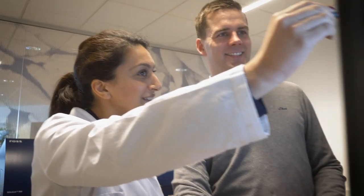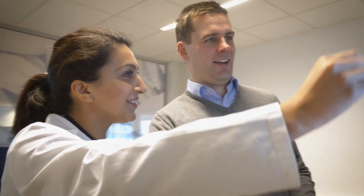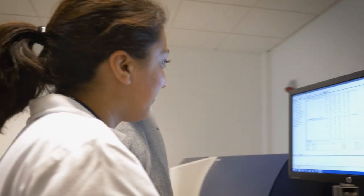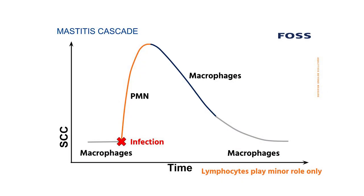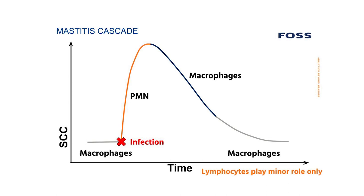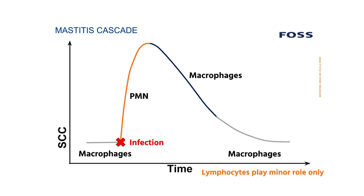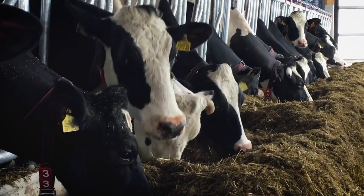The function of the neutrophils is to simply kill the bacteria. Once the neutrophils have succeeded in doing so, the somatic cell count will start to decrease and macrophages will take over again. The third population, the lymphocytes, plays only a minor role in this whole process, occurring at consistently low proportions.